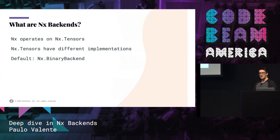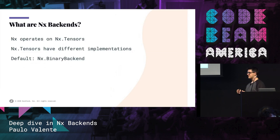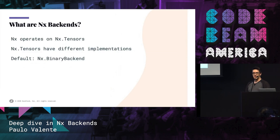As I said, NNX operates on tensors, which are, in a simple way, multidimensional arrays of numbers — matrices, vectors, scalar numbers. They are all tensors as well. And in NNX, tensors have different implementations.